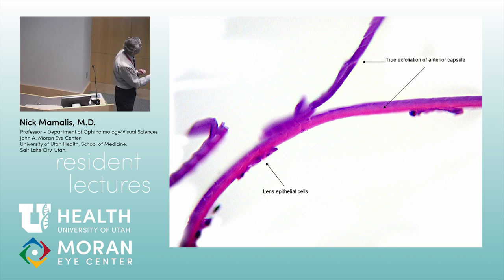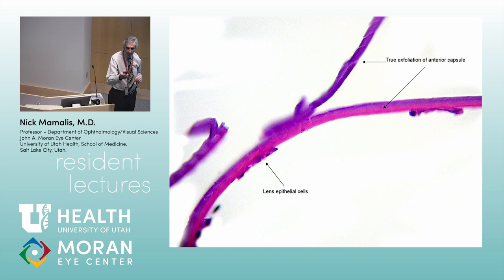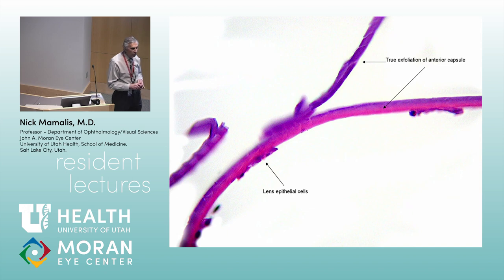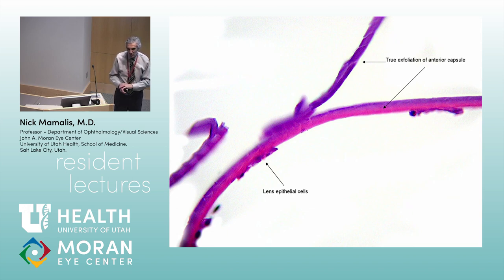Here you can see the lens epithelial cells and the anterior capsule — and look at this split. There's actually a lamellar splitting and it scrolls, as opposed to pseudoexfoliation which is not in the lens capsule itself but a deposition on the lens capsule. Interestingly, these patients don't have corneal pathology, likely because it's more infrared than actual heat. True exfoliation is so rare — when you see two in 35 years, it's really, really rare.